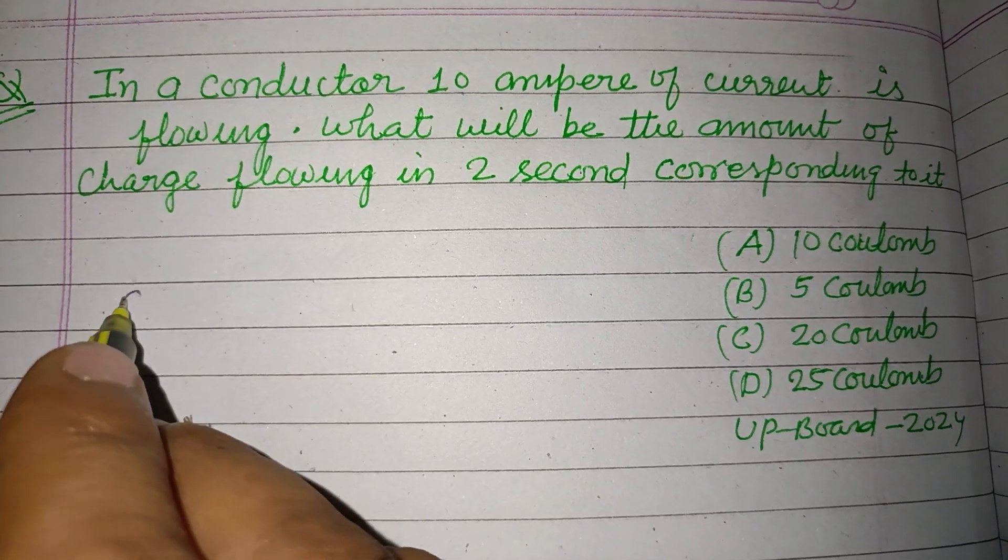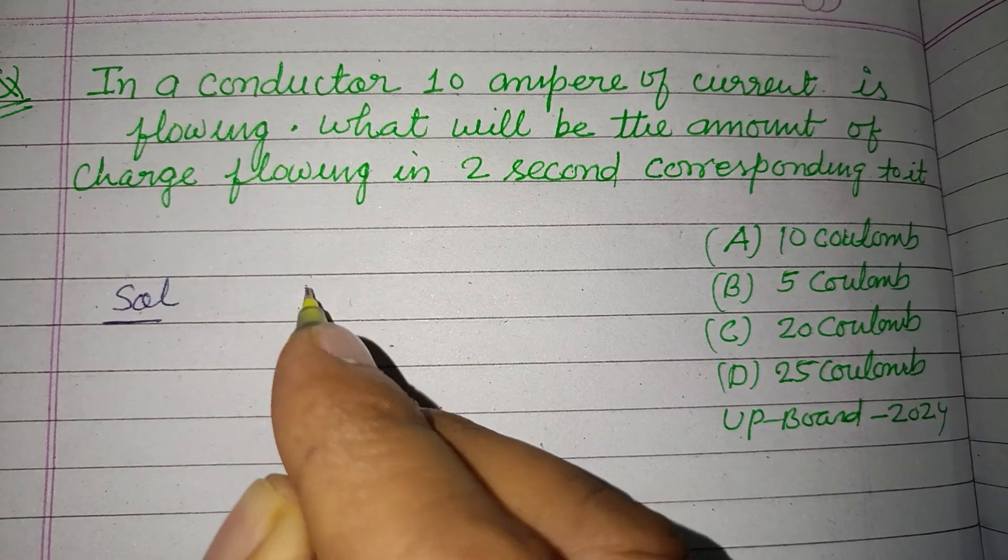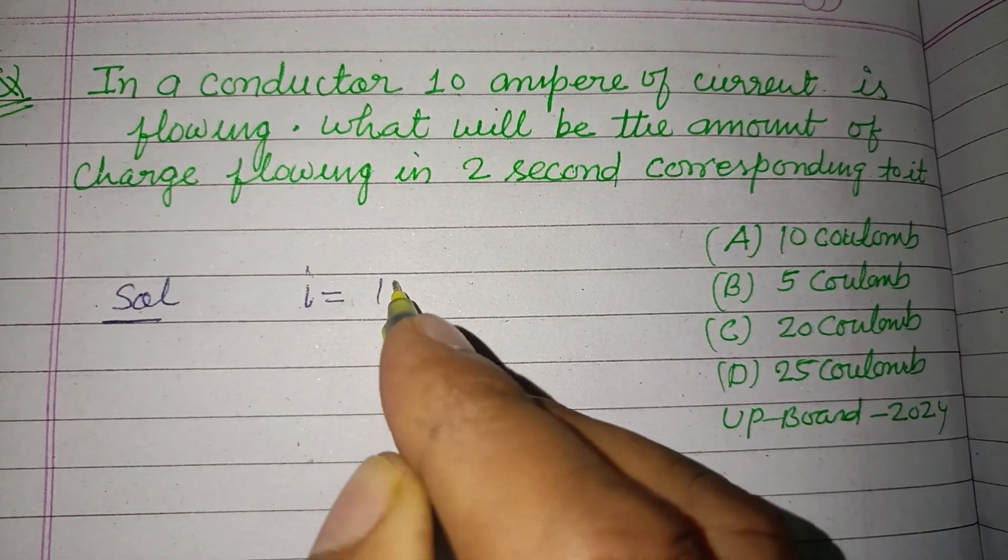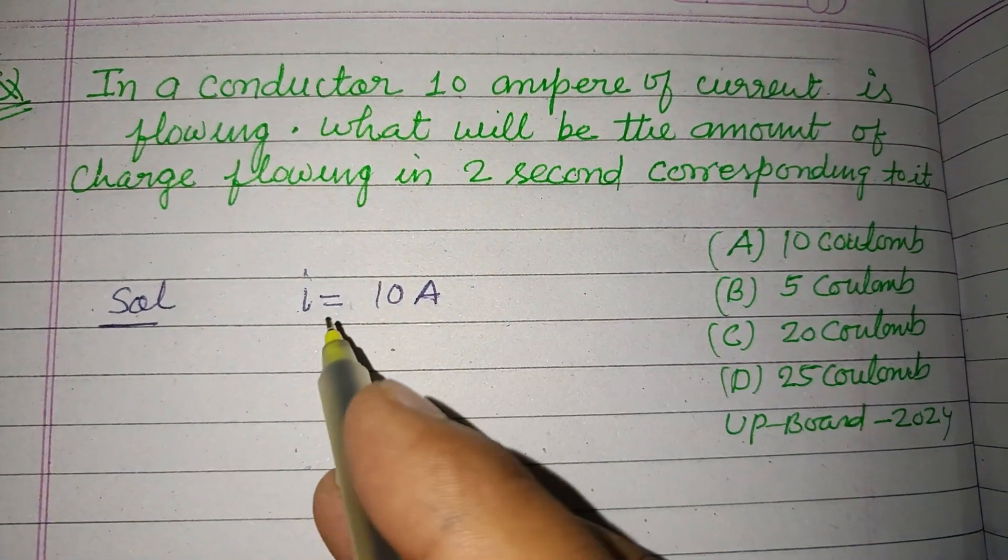So students, here current is given: I = 10 ampere. What will be the amount of charge? Charge is asked, so Q is required.